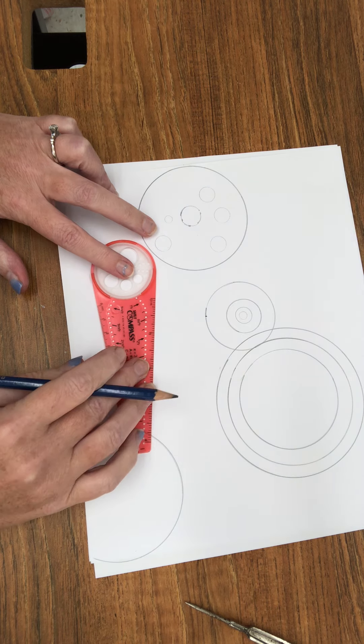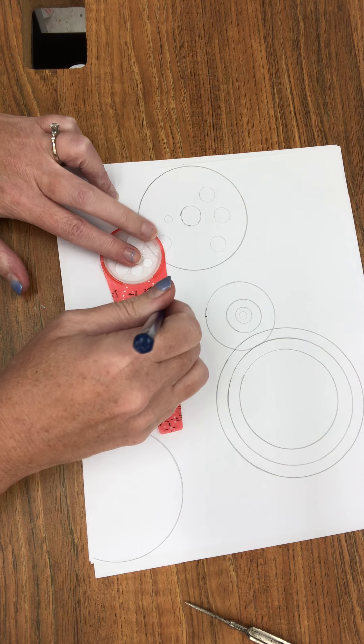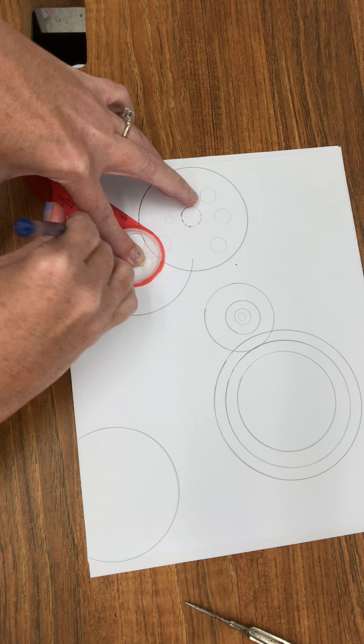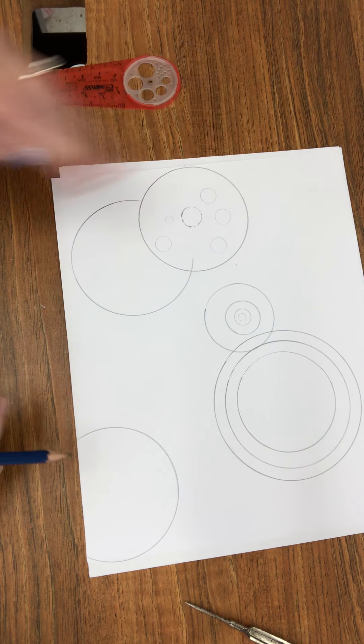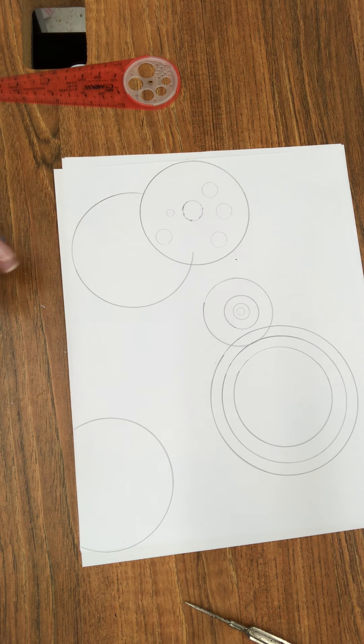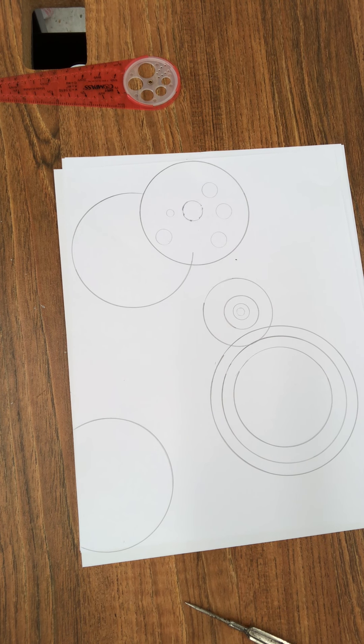All right, so you get the idea. What I want you to do is fill up the whole paper with circles. They can overlap. You don't have to overlap them if you want them to just make it look like one is underneath the other. That's fine also.